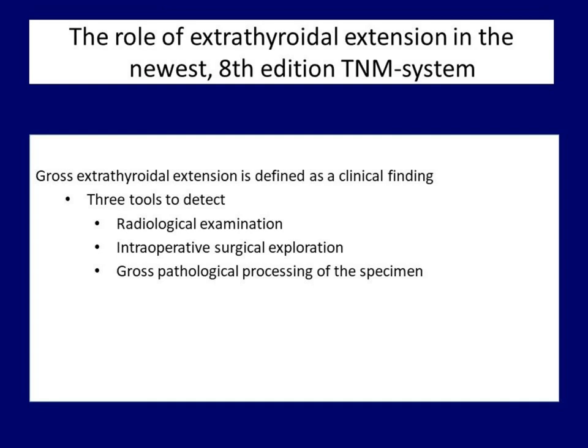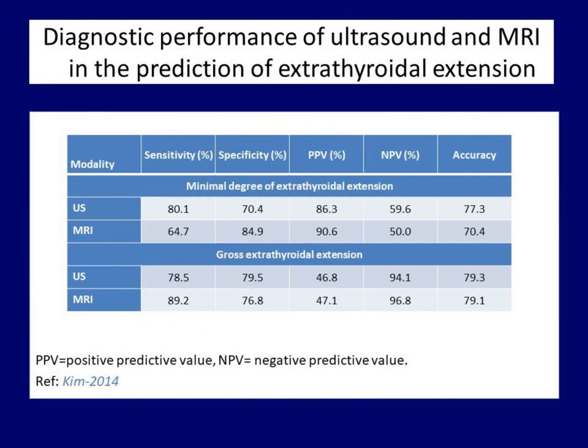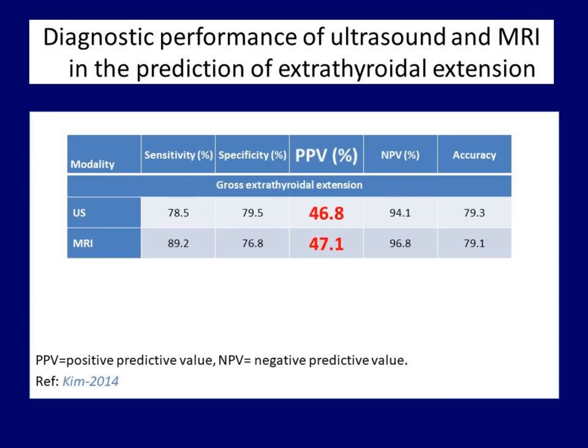This table shows the main statistical parameters of ultrasound and MRI regarding their performance in detection or exclusion of extrathyroidal spread. Focusing on the positive predictive value: if radiology were indeed suitable for judging extrathyroidal propagation, this value would have to be very high. This value is very good in the judgment of minimal extrathyroidal extension. However, minimal spread has no relevance in further staging and therapy. In terms of gross extension, positive predictive value is much worse at only 50%, meaning that neither ultrasound nor MRI is accurate enough to be the basis of a decision that affects a patient's fate.